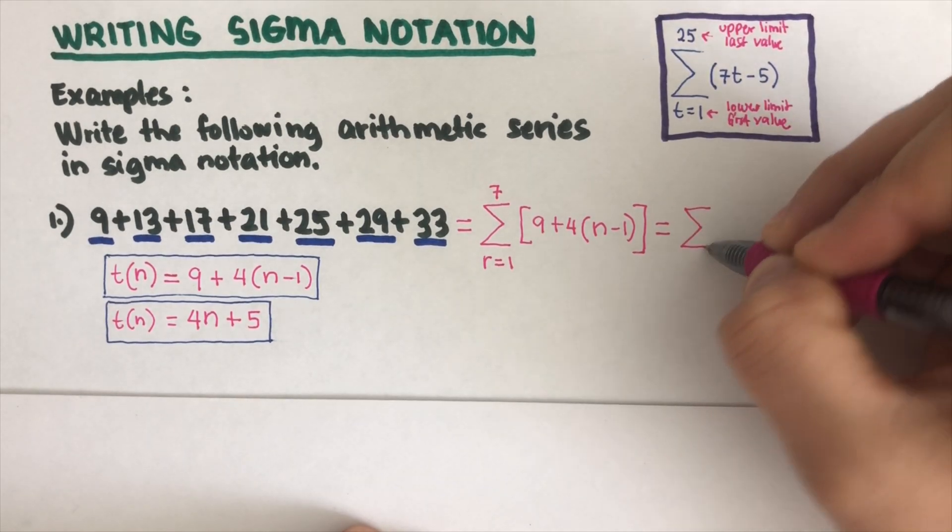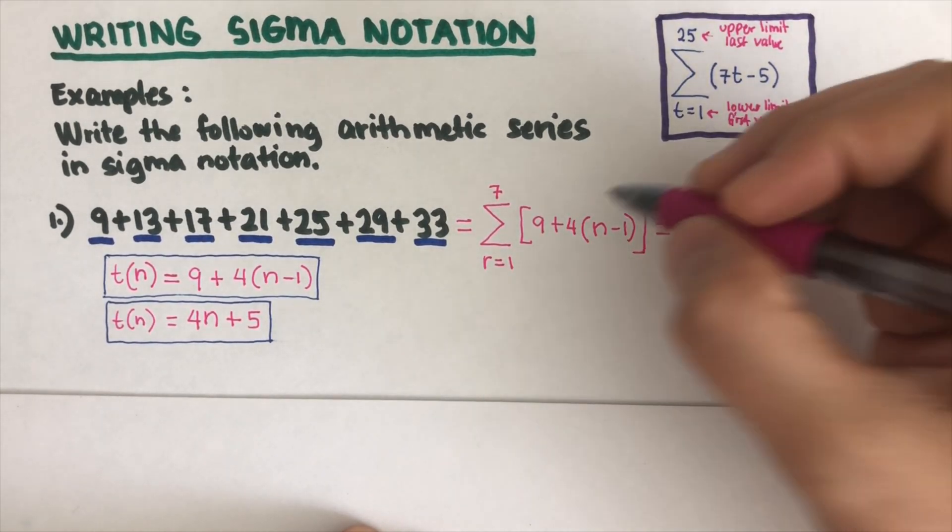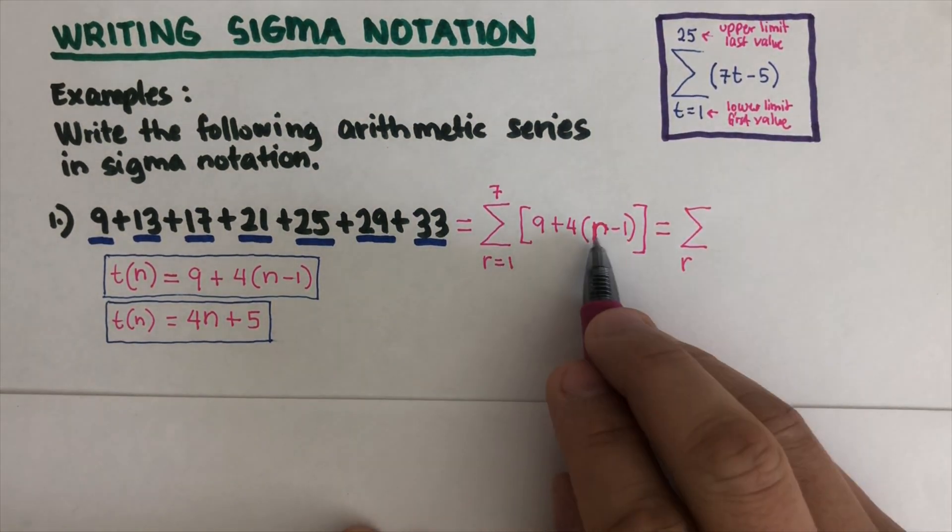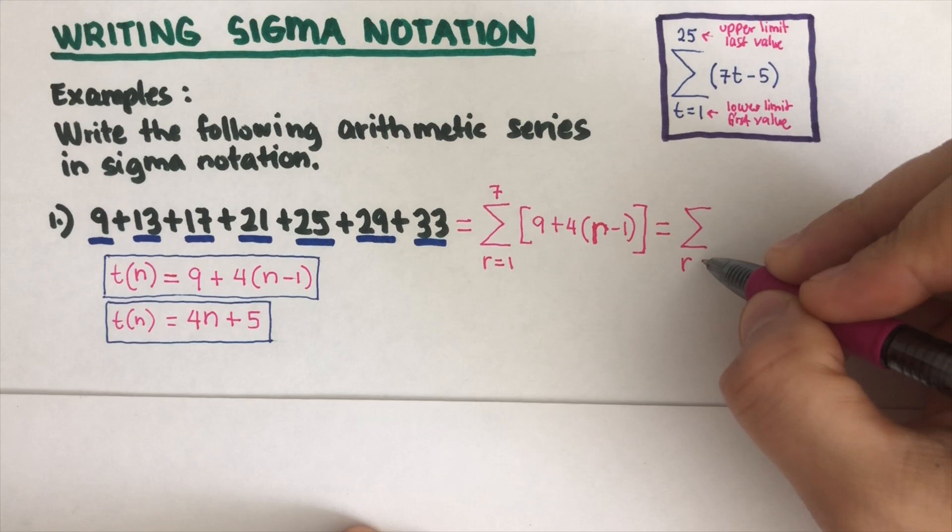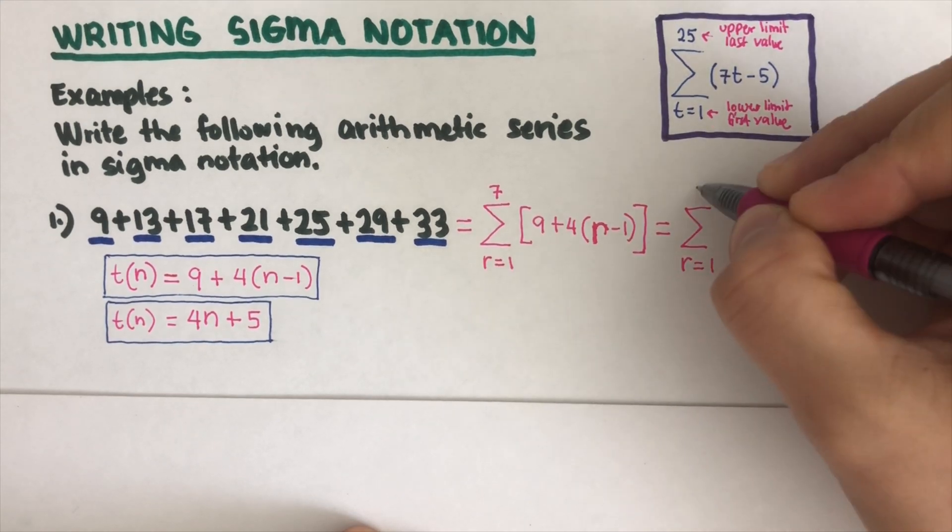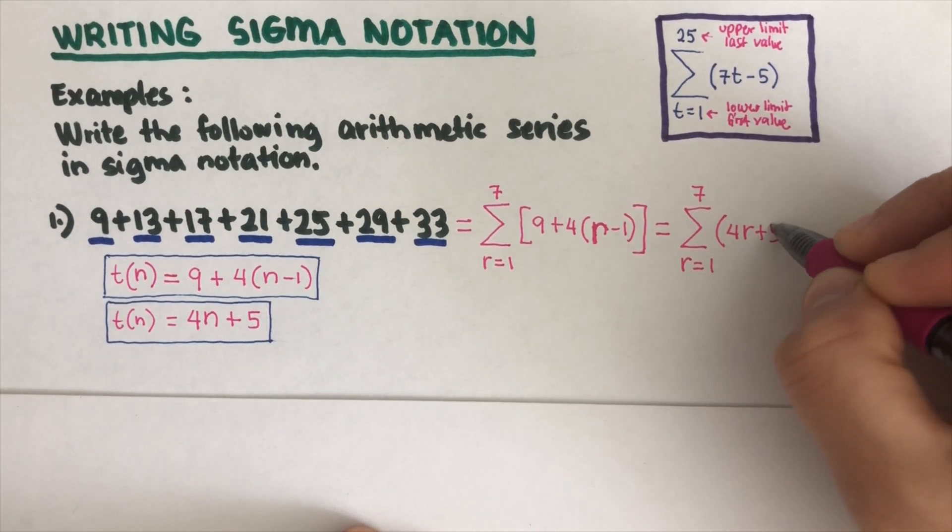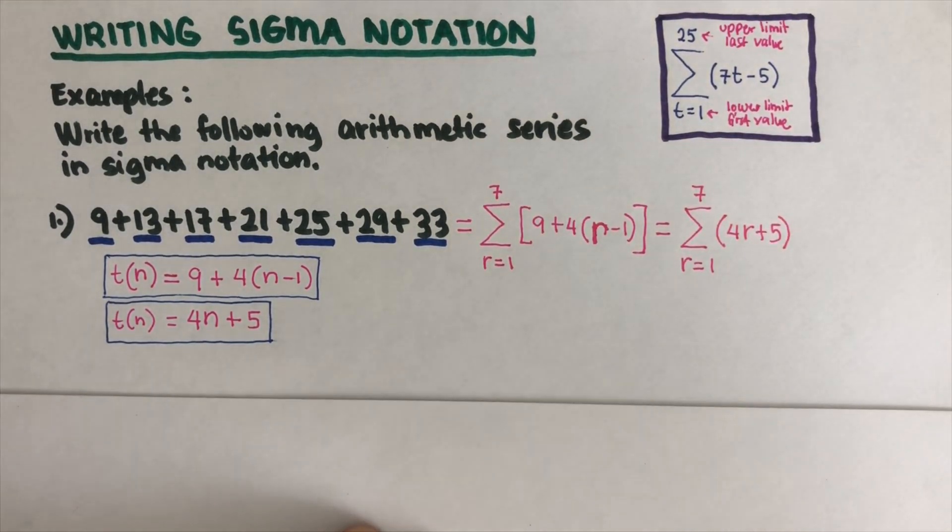That would be Sigma again, let's use r. This becomes an r because we're using r, it has to be consistent. This is equal to 1 and 7, and the equation now is 4r plus 5. We need to evaluate this.